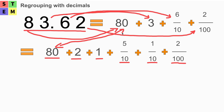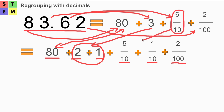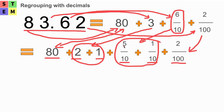So where does this come from? 80 is still 80. The 3 has been separated into 2 plus 1. The 6 over 10 is separated into 5 over 10 plus 1 over 10. And 2 over 100 stays as 2 over 100 — nothing changed there. So the only changes are: 3 became 2 plus 1, and 6 over 10 changed to 5 over 10 plus 1 over 10.